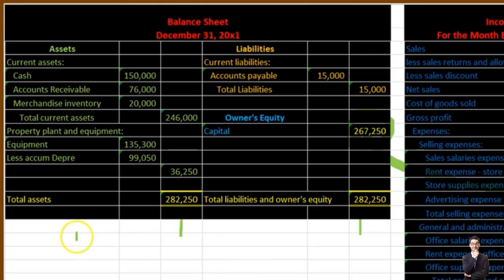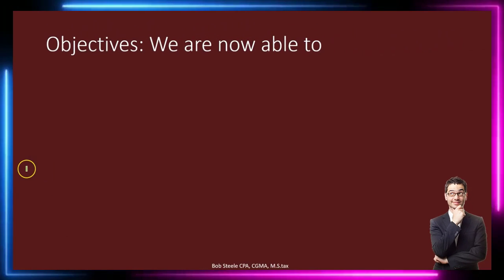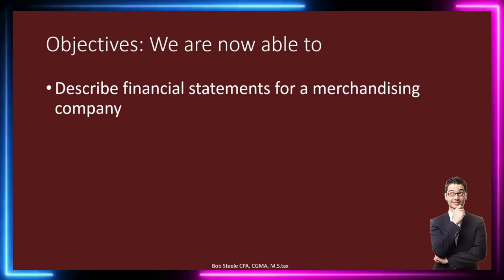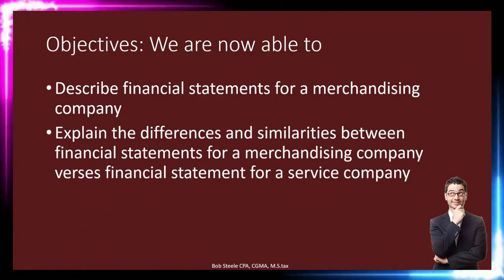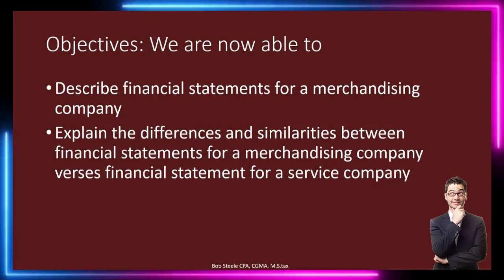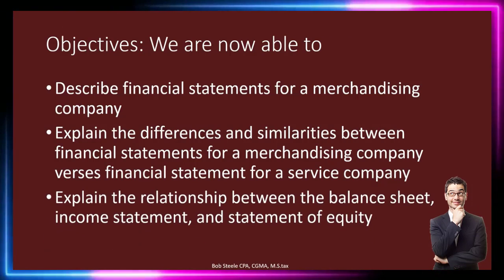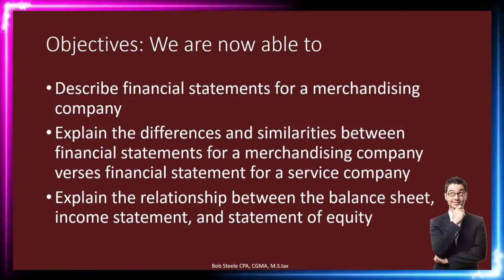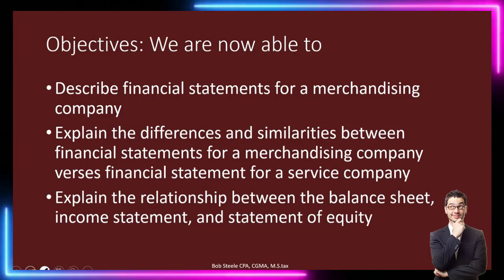The entire balancing statement — the balance sheet — is as of a point in time: total assets equal liabilities plus owner's equity. We are now able to describe financial statements for a merchandising company, explain the differences and similarities between financial statements for a merchandising company versus a service company, and explain the relationship between the balance sheet, income statement, and statement of equity.